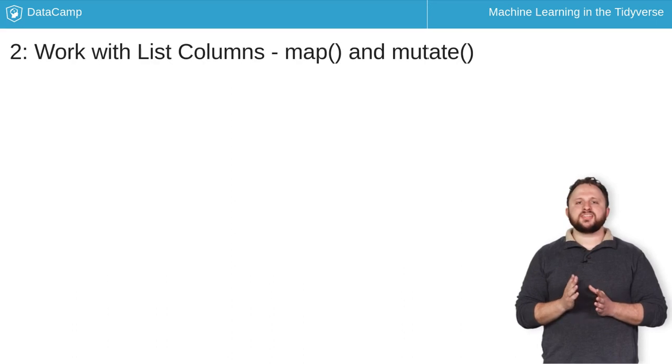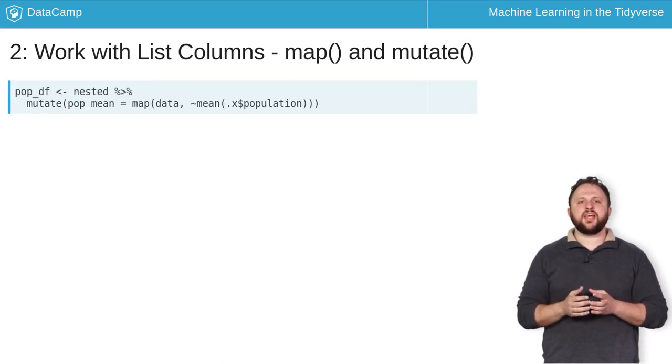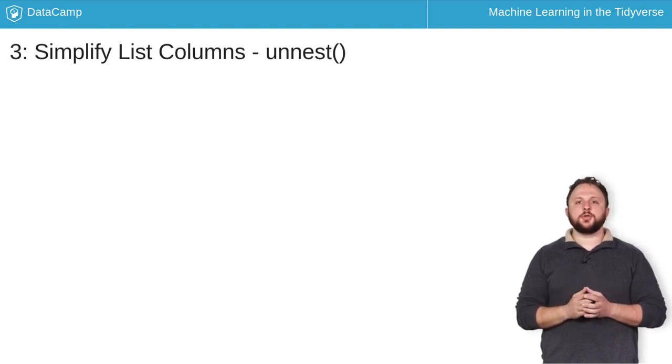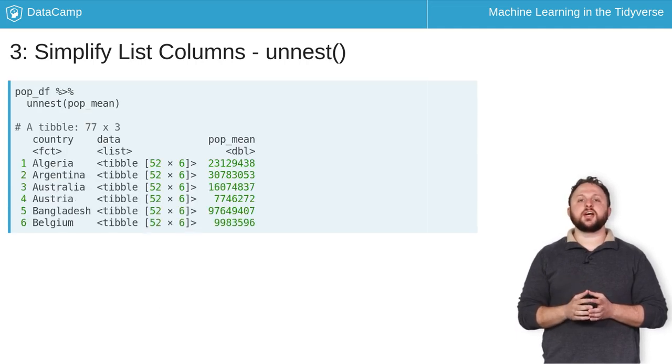Remember that tibbles are special data frames that allow us to store arbitrarily complex list columns. Because of this, you can append the resulting list of population means using the mutate function. Of course, storing the list of doubles isn't very practical for exploration, so you need to simplify these columns using unnest.